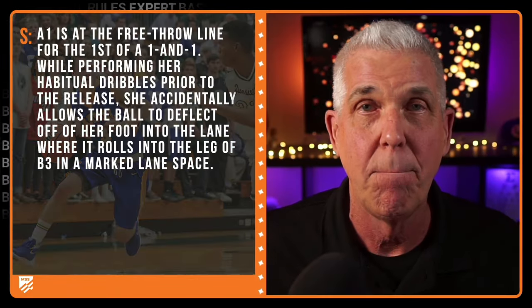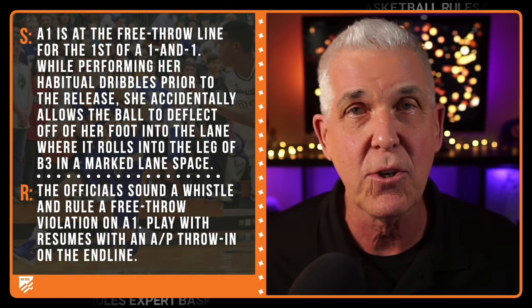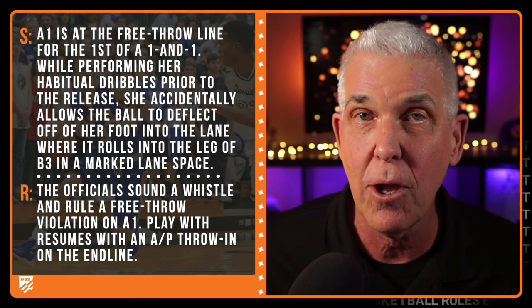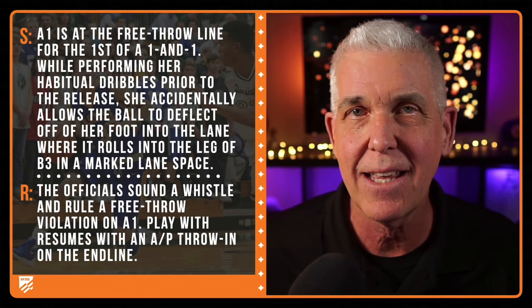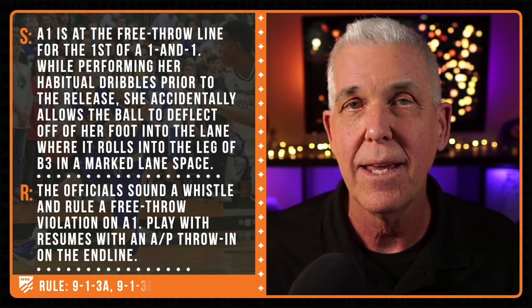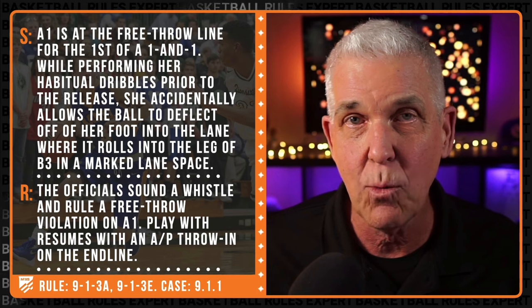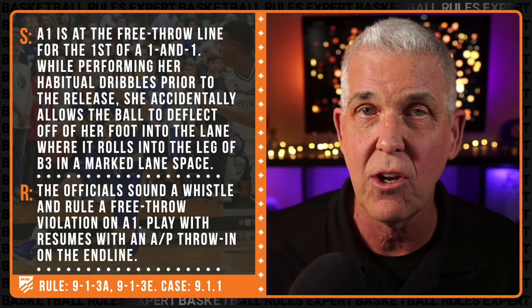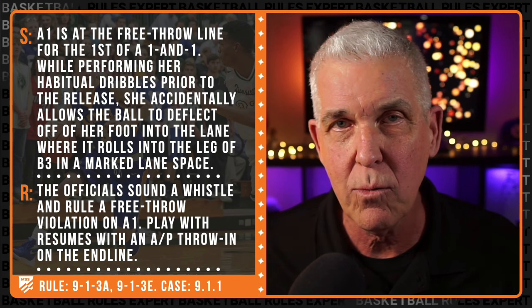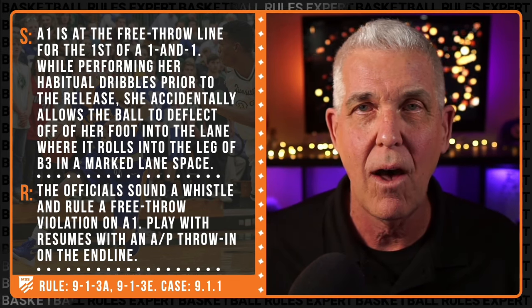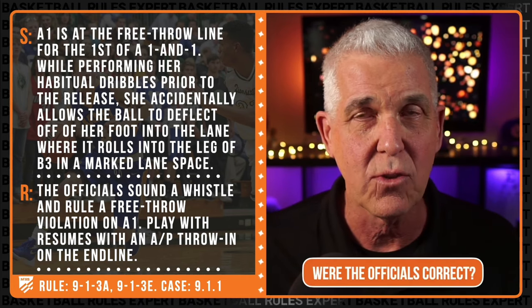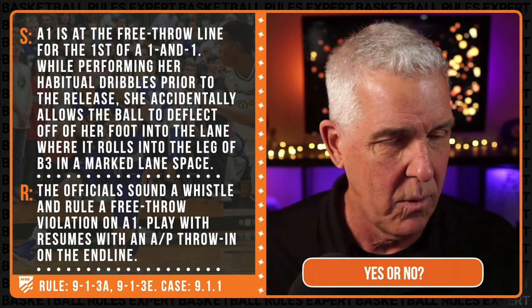Let's move on now to our very next play scenario. A1 is at the free throw line for the first of a one-and-one while performing her habitual dribbles prior to the release. She accidentally allows the ball to deflect off of her foot into the lane, where it rolls into the leg of B3 in a marked lane space. The officials sound a whistle and rule a free throw violation on A1. Play will resume with an AP throw-in on the end line. Were the officials correct? Yes or no?